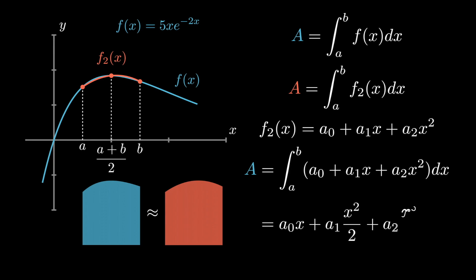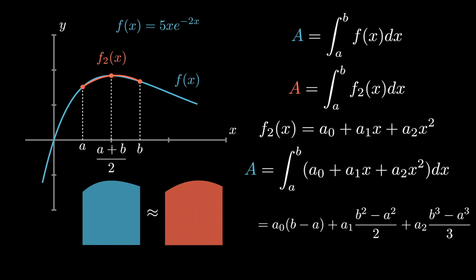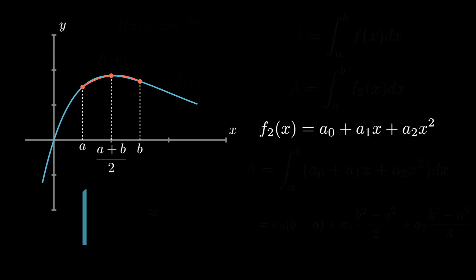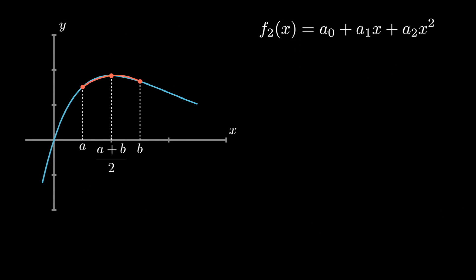After we integrate and apply the limits, we get: a0·(b−a) + a1·(b²−a²)/2 + a2·(b³−a³)/3. Now we have an expression for area with three unknowns: a0, a1, and a2.